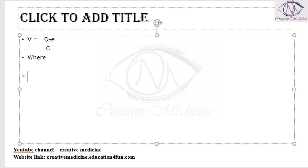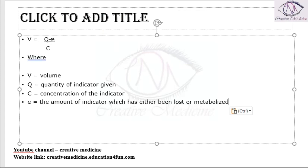What is V? V is the volume, Q is the amount or quantity of indicator given, E is the amount of indicator which is lost or metabolized, and C is the concentration of indicator.